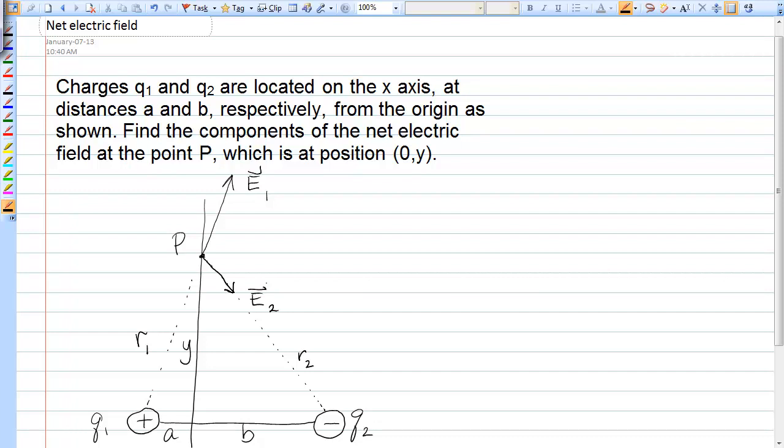Now we're trying to find the vector sum of these two fields, which would be pointing somewhere up here. That will be our E net. And we're just trying to find the two components of E net.